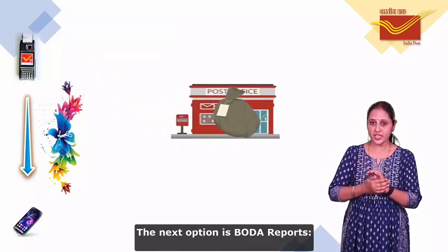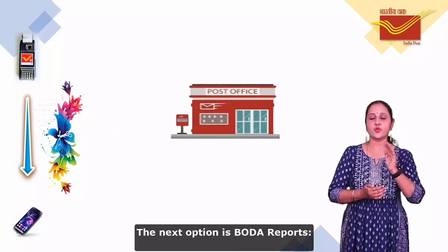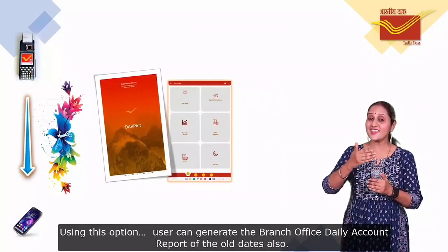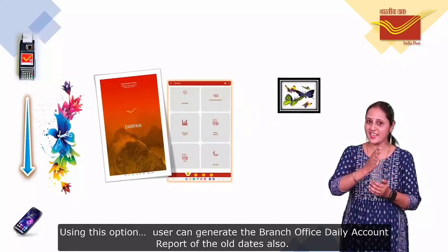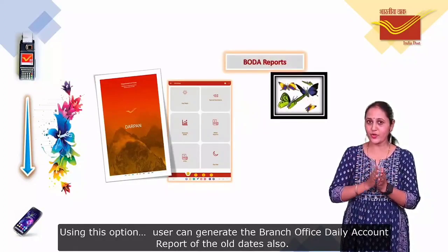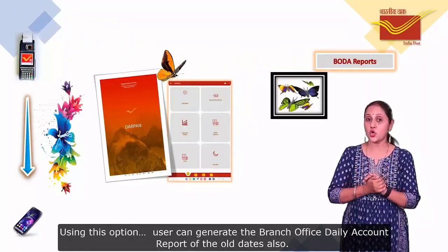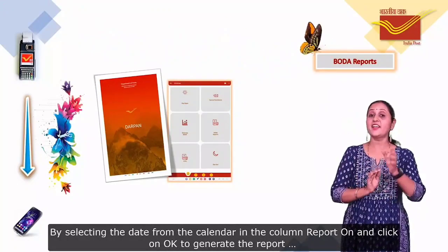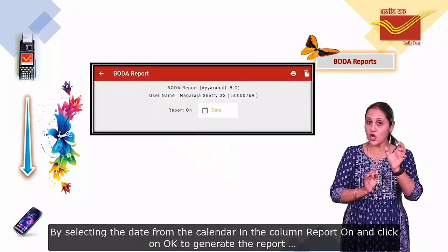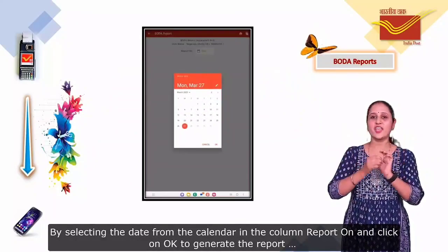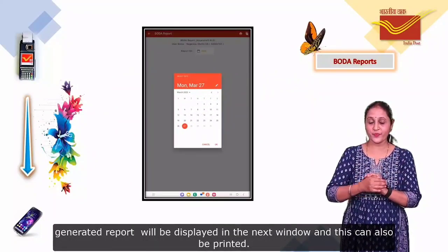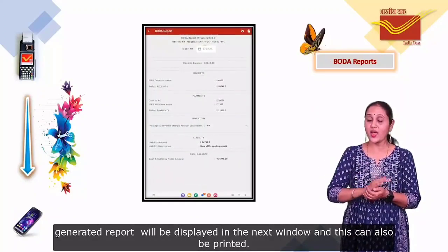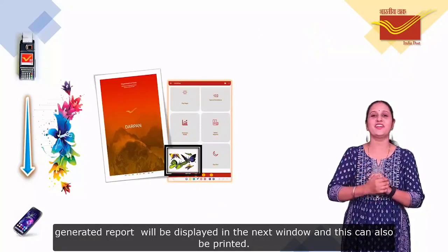The next option is Boda Reports. Using this option, the user can generate the Branch Office Daily Account report of old dates as well. By selecting the date from the calendar in the column Report For and clicking on OK to generate the report, the generated report will be displayed in the next window and can also be printed.